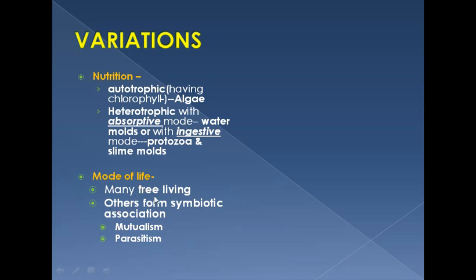Mode of life is mostly free-living, but some may form symbiotic associations — some are in mutualism or parasitism. Mutualism is a mutually beneficial relationship between two organisms. One example of mutualism is Trichonympha, which is an animal-like protist found in the gut of termites. Termites cannot digest cellulose, and Trichonympha helps them do so.